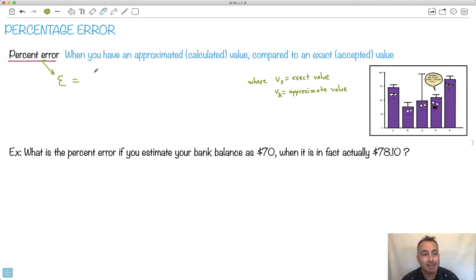First of all, it's got the absolute value of VA minus VE, all that over VE. So it really helps to discuss what are these different things. By the way, there's a times 100 because you want the percent error as a percent. You want to know what percent off you are.